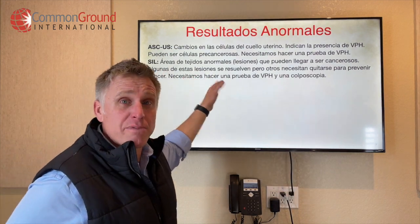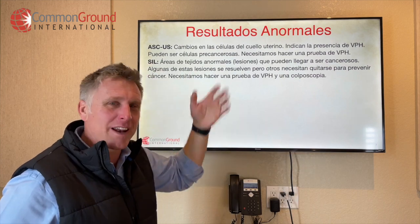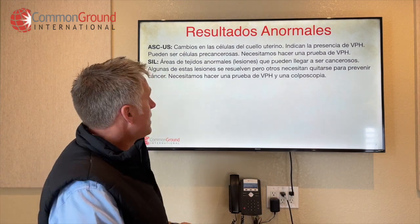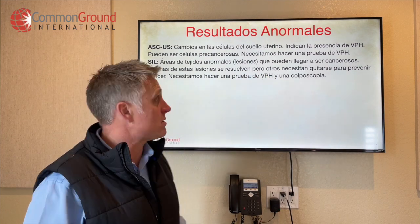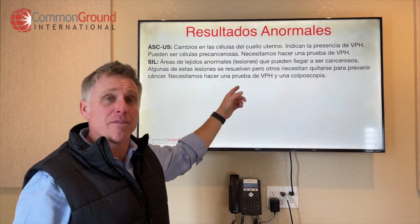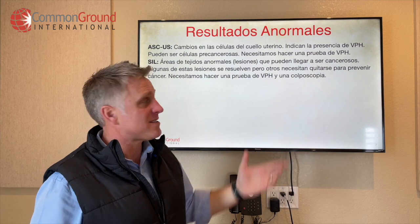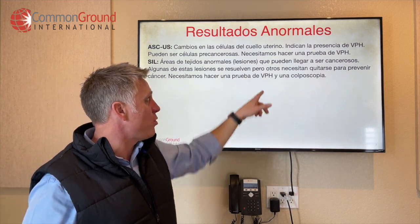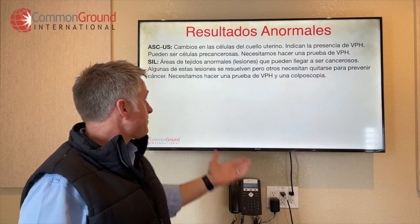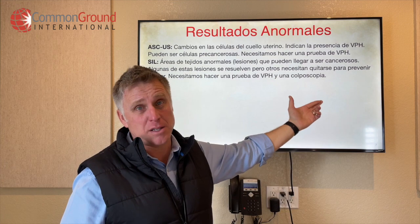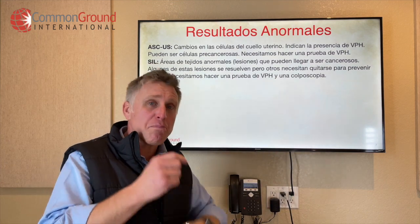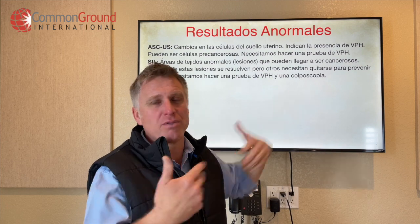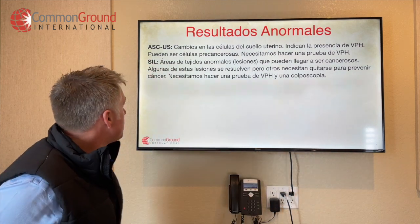These are some sort of squamous intraepithelial lesions. Areas de tejidos anormales — areas of abnormal tissue. Son lesiones que pueden llegar a ser cancerosos — lesions that can become cancerous. Algunas de esas lesiones se resuelven — some of these lesions resolve on their own. Pero otros necesitan quitarse — others need to be taken out — para prevenir cáncer, to prevent cancer. Necesitamos hacer una prueba de VPH y una colposcopia — we need to do an HPV test and a colposcopy. Note: el colposcopio is the instrument, la colposcopia is the procedure.